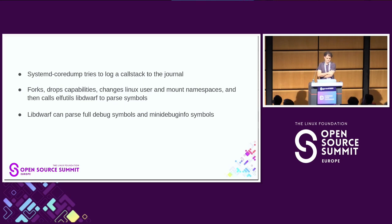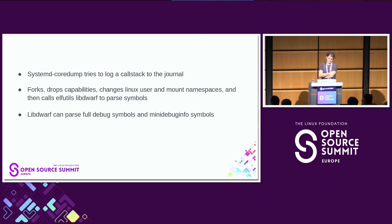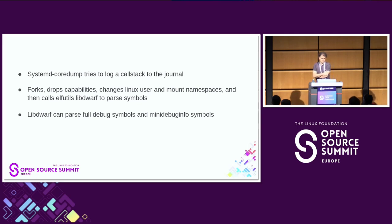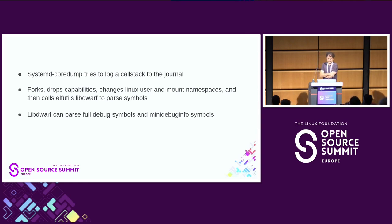Systemd-coredump tries to log a call stack to the journal, including function names using debug symbols. There is a dedicated fork function inside systemd which forks, drops capabilities, changes Linux user and mount namespaces, and then calls libdwfl from elfutils to parse symbols. The whole purpose is to avoid an attacker crafting a malicious binary and taking over the systemd-coredump process. Libdwfl supports full debug symbols as well as mini-debuginfo symbols.